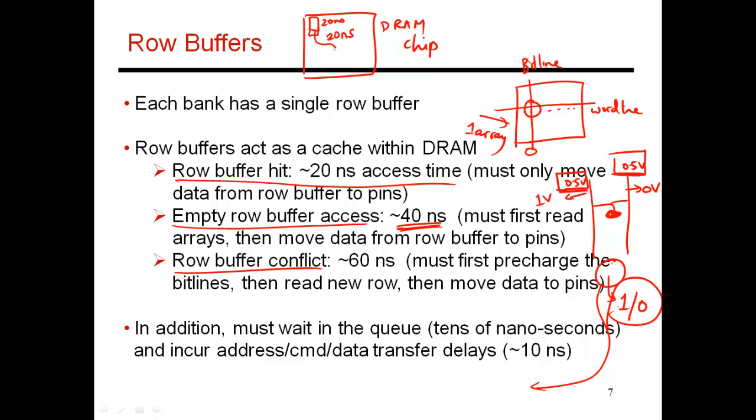And that pre-charge process also takes roughly 20 nanoseconds. So it takes 20 nanoseconds to first do the pre-charge, and that is destroy the contents of the row buffer. Then you spend an extra 20 nanoseconds reading the new row into the row buffer. And then you spend an extra 20 nanoseconds moving the data from the row buffer to the output pins. So that takes 60 nanoseconds. So your memory access time is going to be a function of whether you find an empty row, or whether there's a row buffer conflict, or whether there's a row buffer hit.